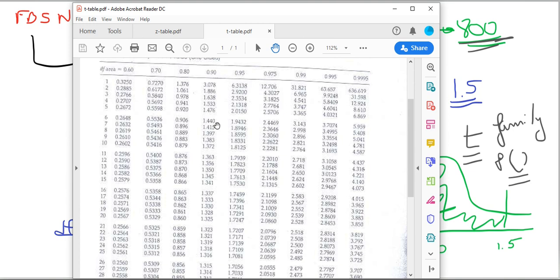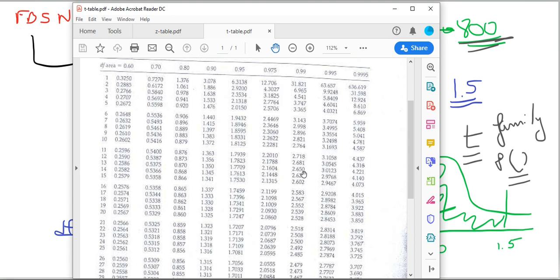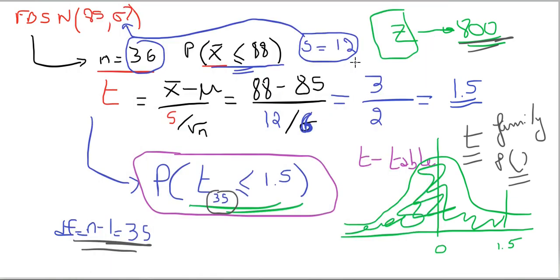Let me just finish explaining the table. What you have inside are the actual t values. So for example, if your degrees of freedom is 10 and your t is less than or equal to 1.8125, do you see it? The probability or the area below 1.8125, you go up, is 95 percent.